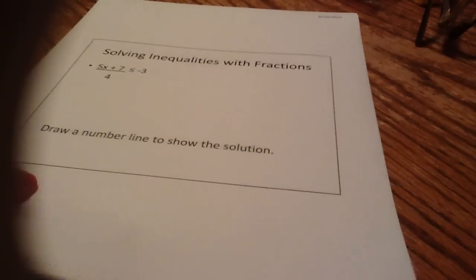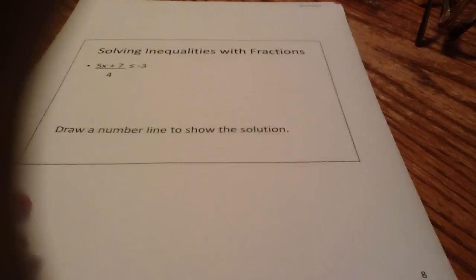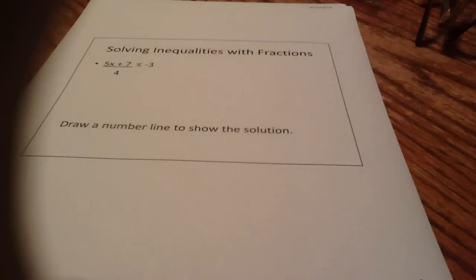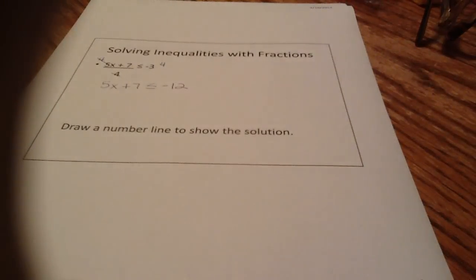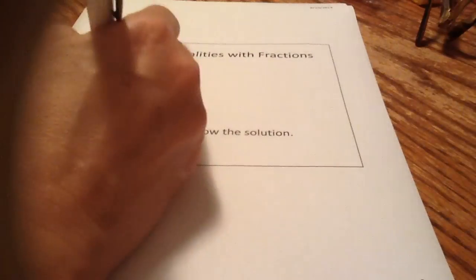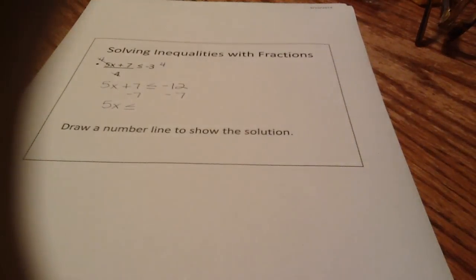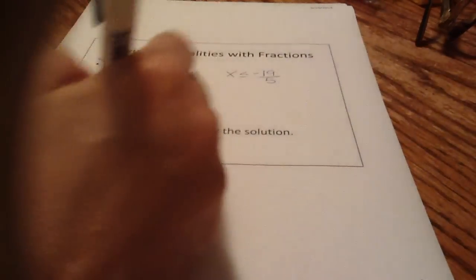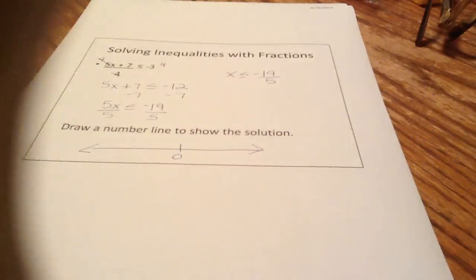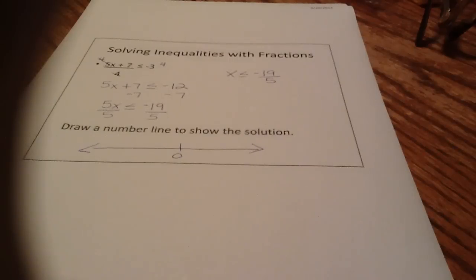What if we need to solve inequalities with fractions? Remember when we had fractions solving linear equations, we multiplied through by a common denominator. The common denominator here is 4. So multiply both sides by 4, and we get 5x plus 7 is less than or equal to negative 12. Subtract 7, and we get 5x less than or equal to negative 19. Divide by 5, and x is less than or equal to negative 19 fifths, which is about negative 3 and 4 fifths — almost negative 4.